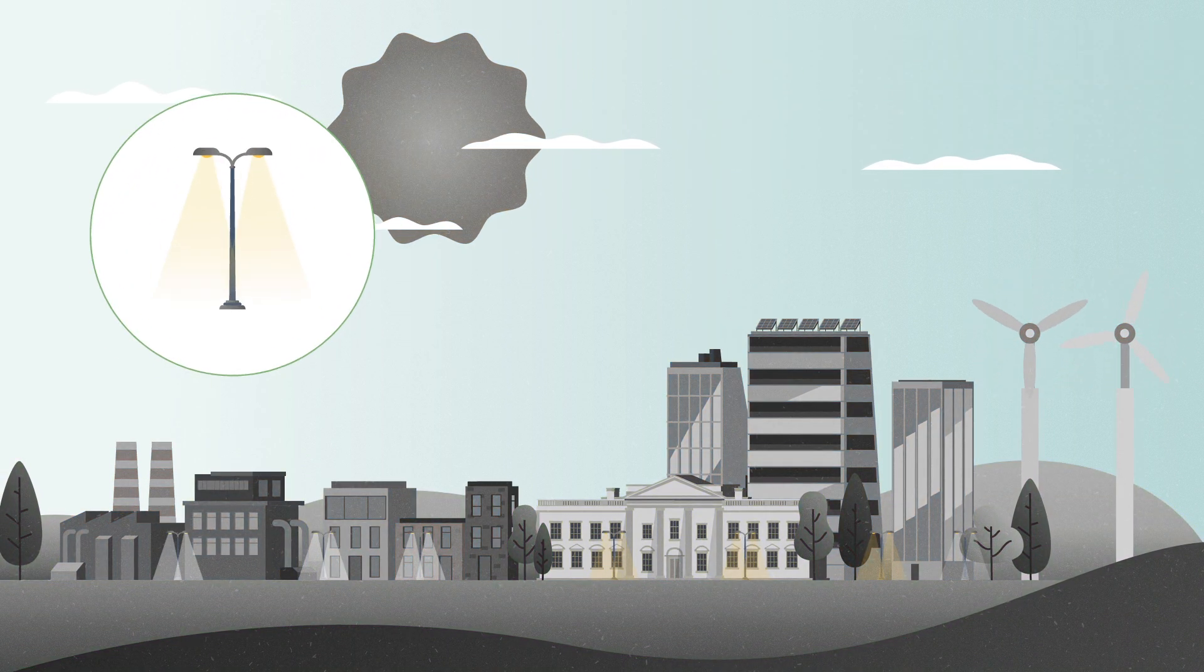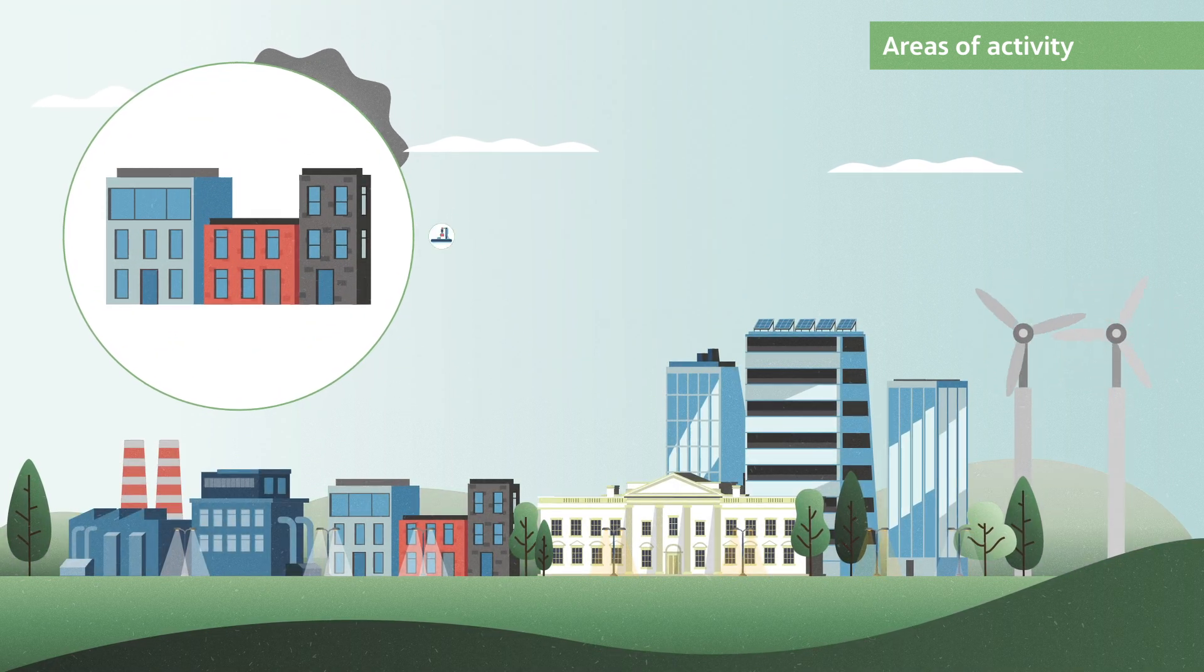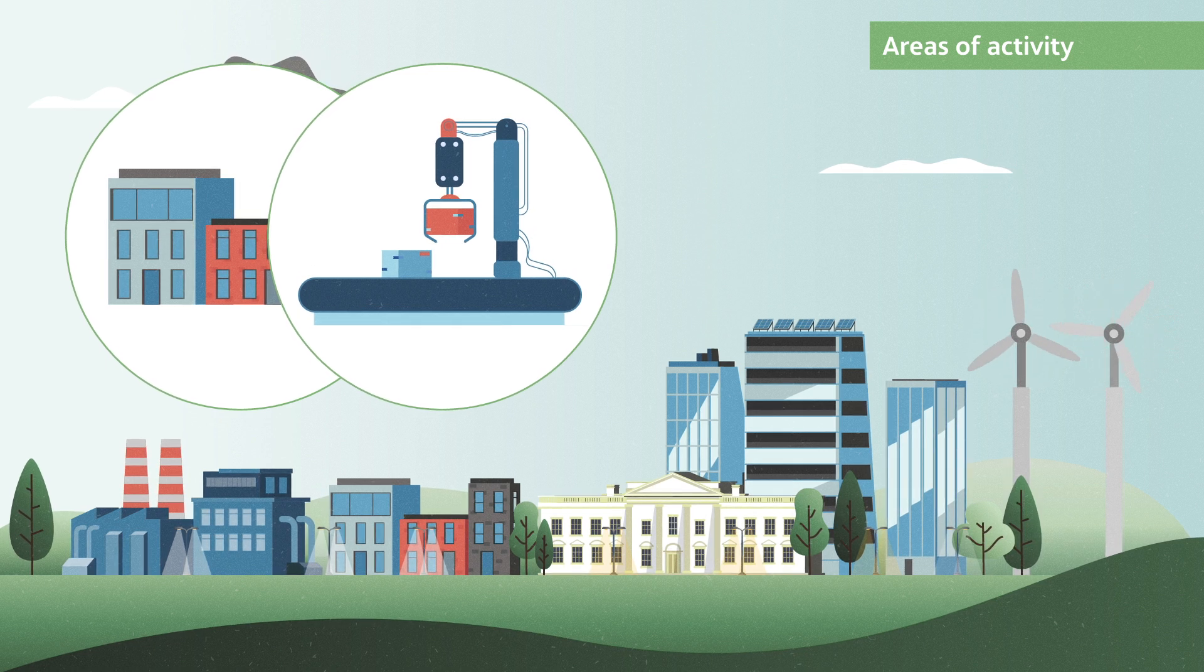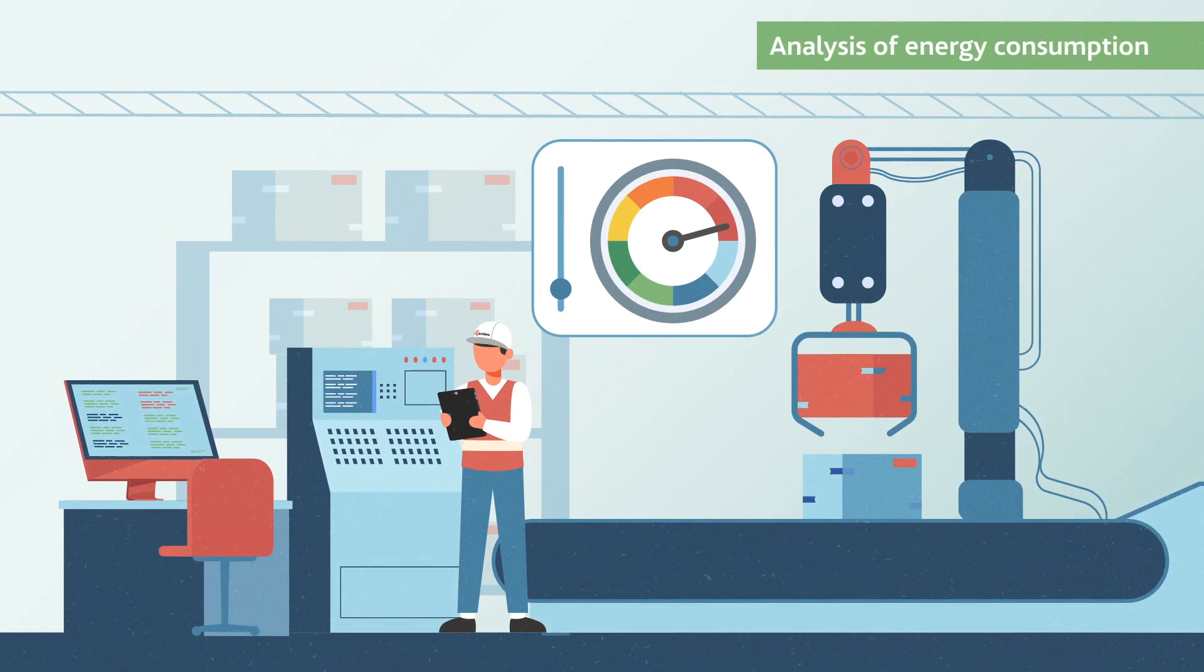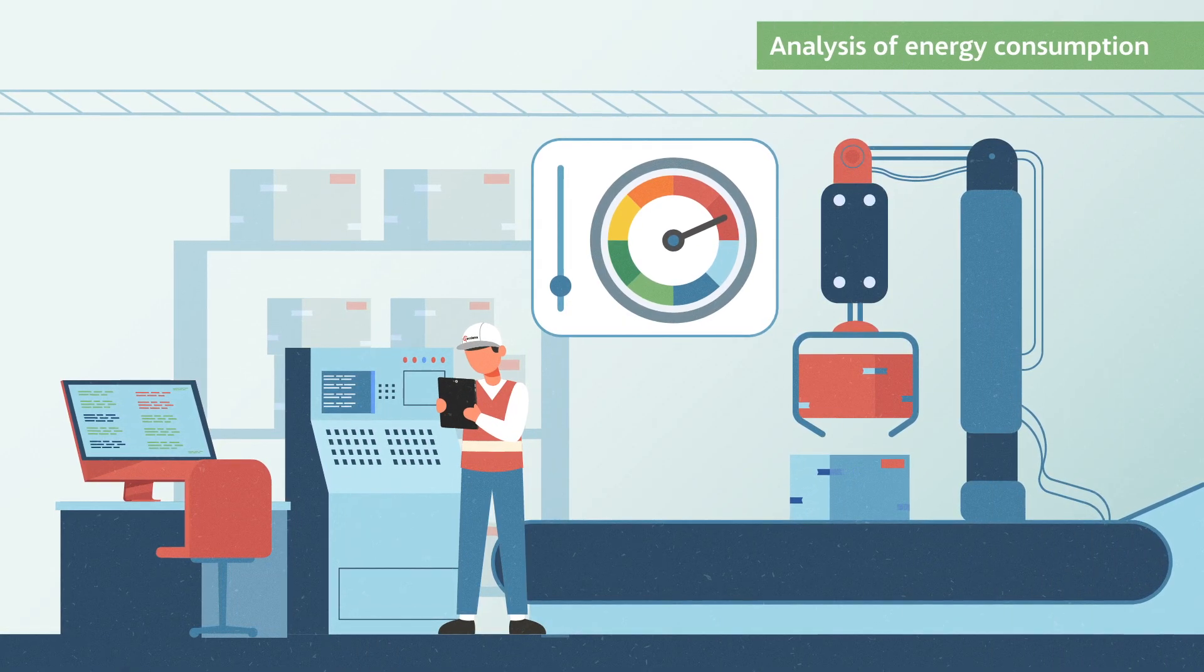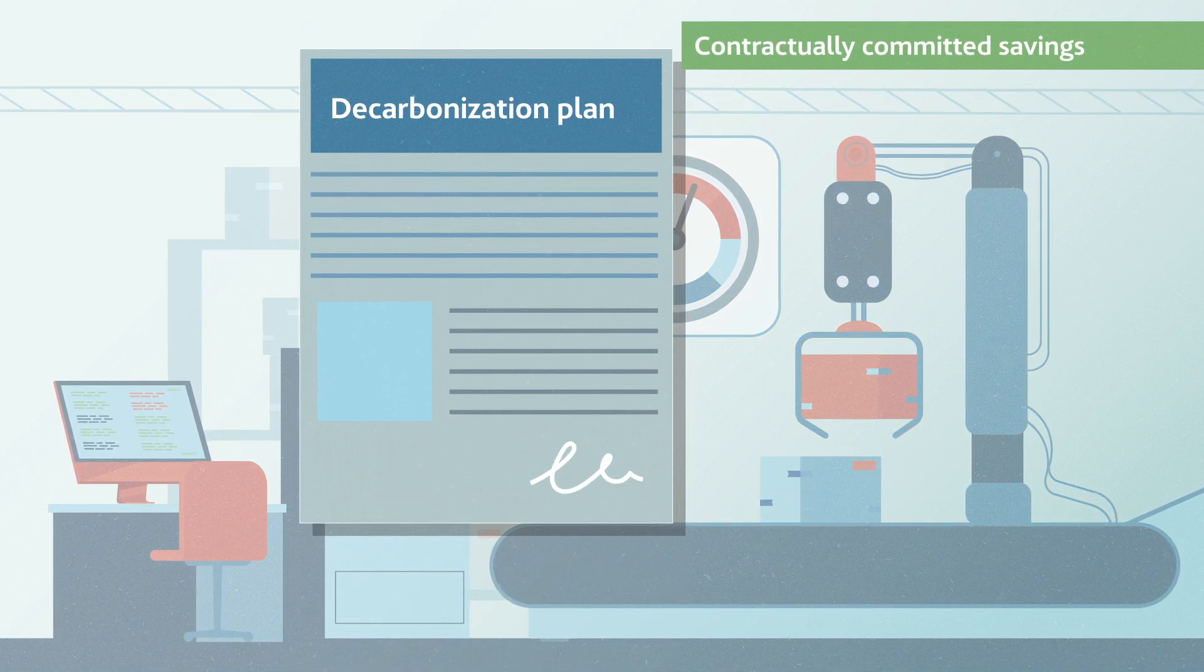First, the ESCO analyzes and audits the customer's energy consumption and costs. Based on this information, a decarbonization plan is developed and an energy performance contract is signed.